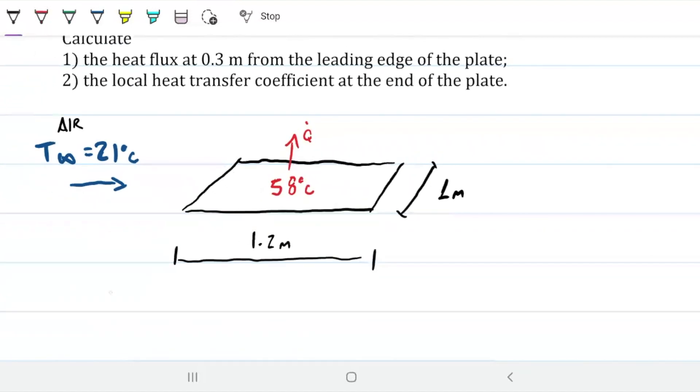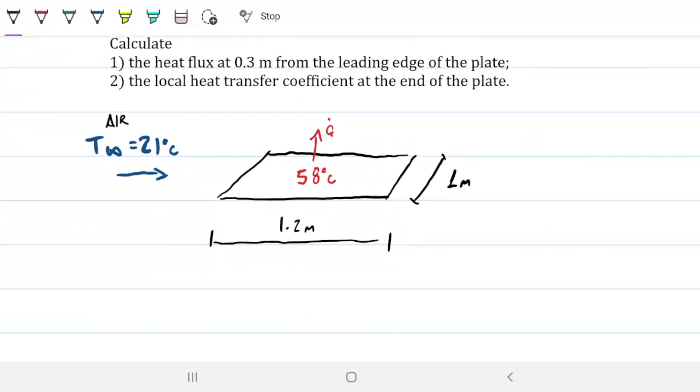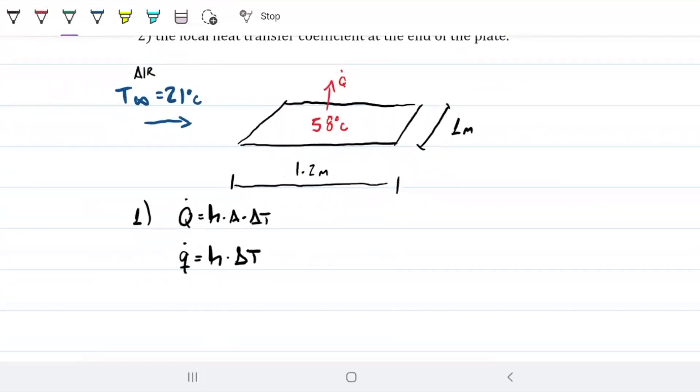We're going to do part one. So part one, calculate the heat flux at 0.3m. We're going to do part one as per usual with our Newton's law of cooling. And as per usual, this is equivalent to saying that the heat flux is Q dot equals h delta T. Since we want heat flux, all we need to do is find what is our convective coefficient and our delta T. Delta T we already know. The only thing we don't know is our convective heat transfer coefficient, which in this case is quite easy to find because we have an equation for it. And we're interested in the h at this point here, which is 0.3m.